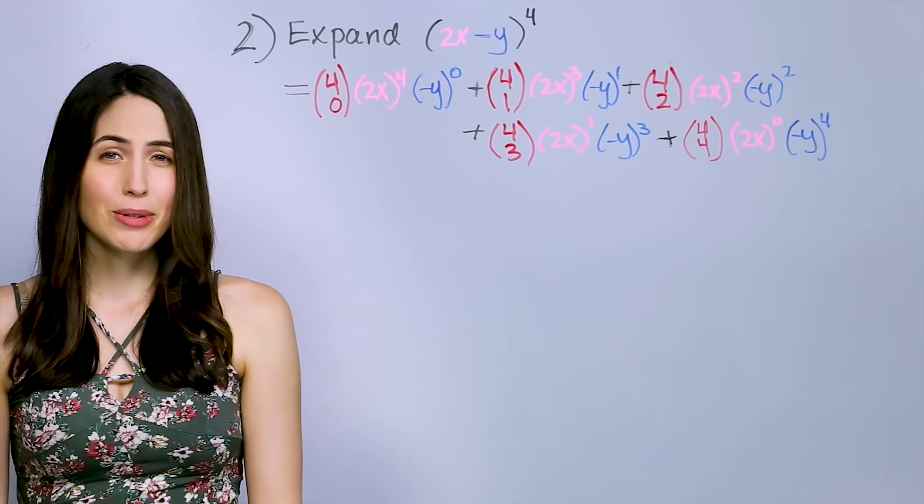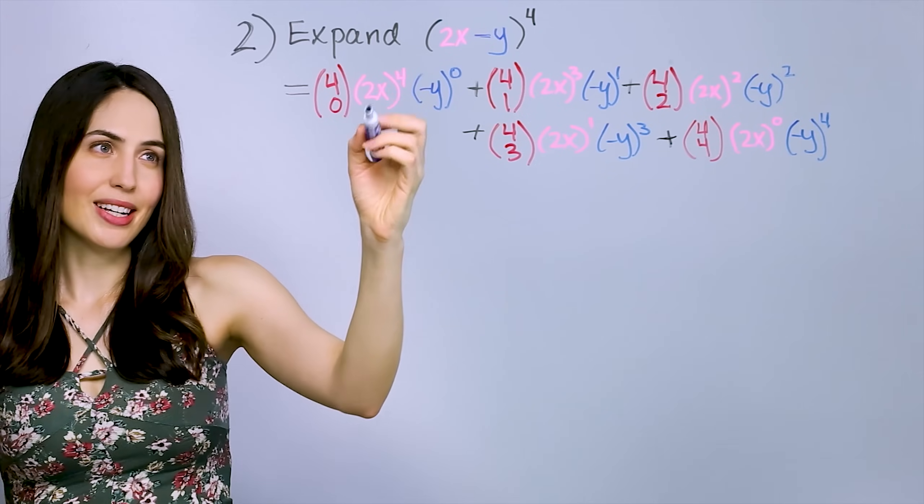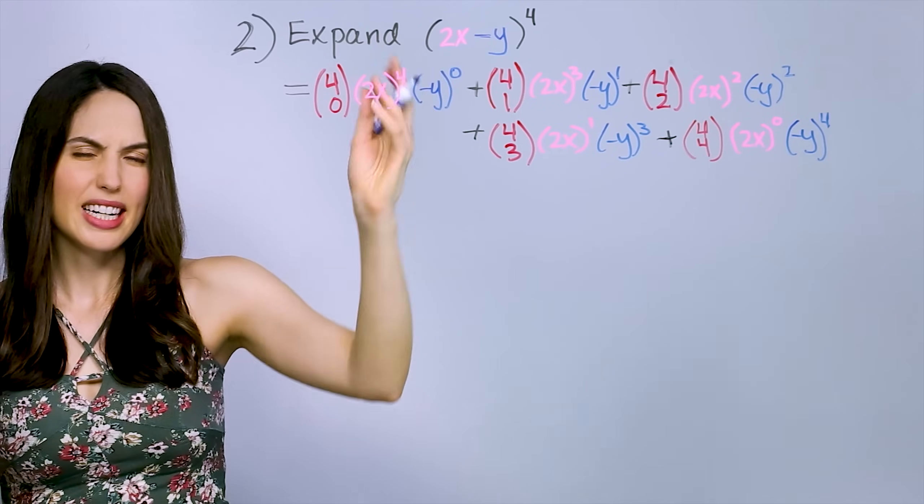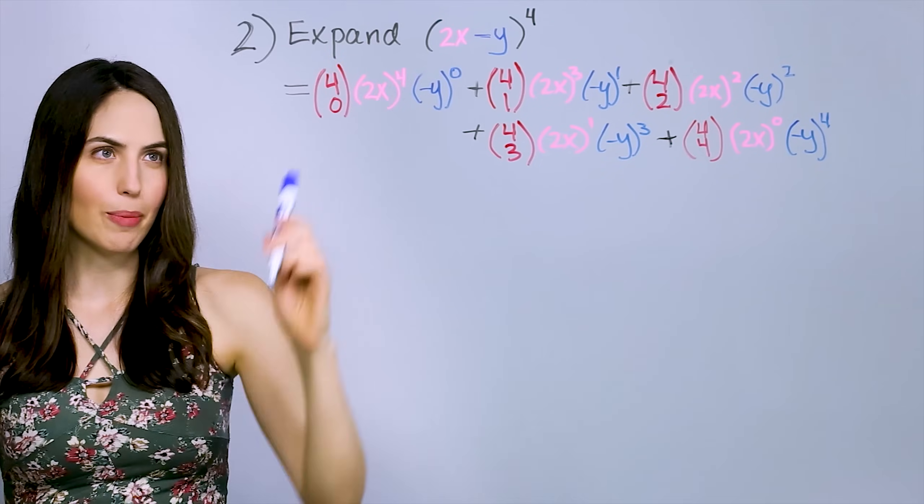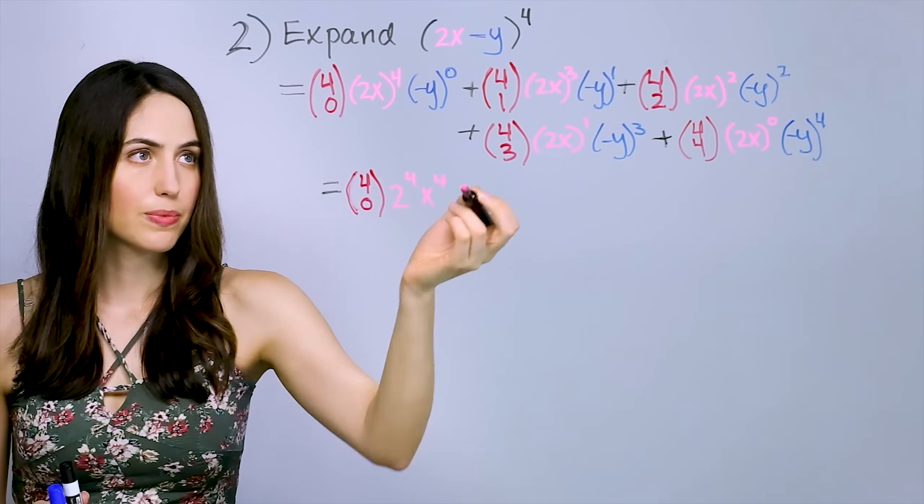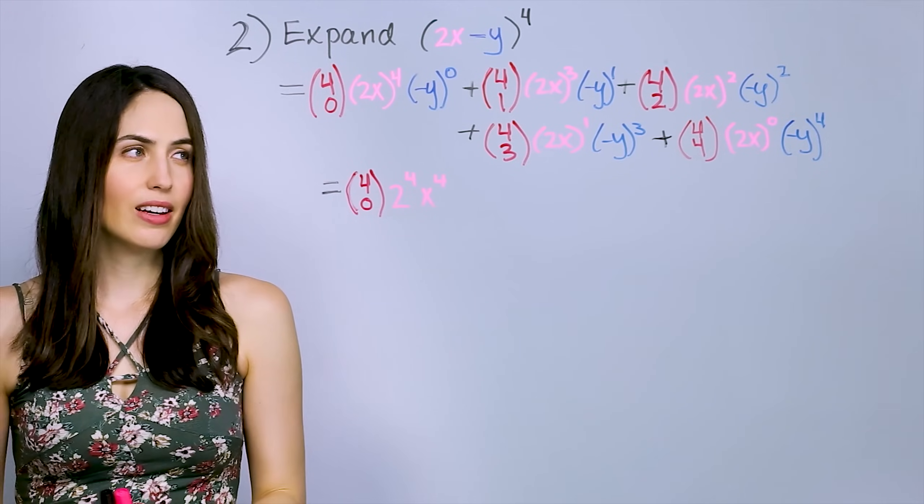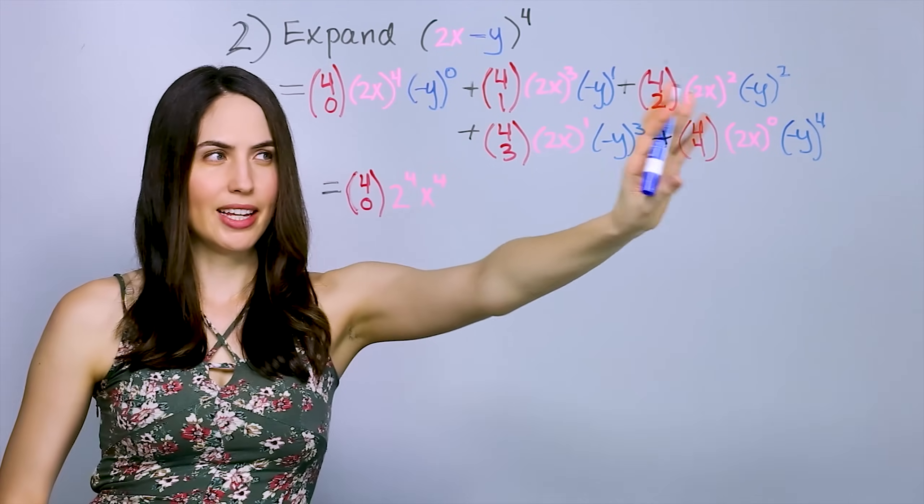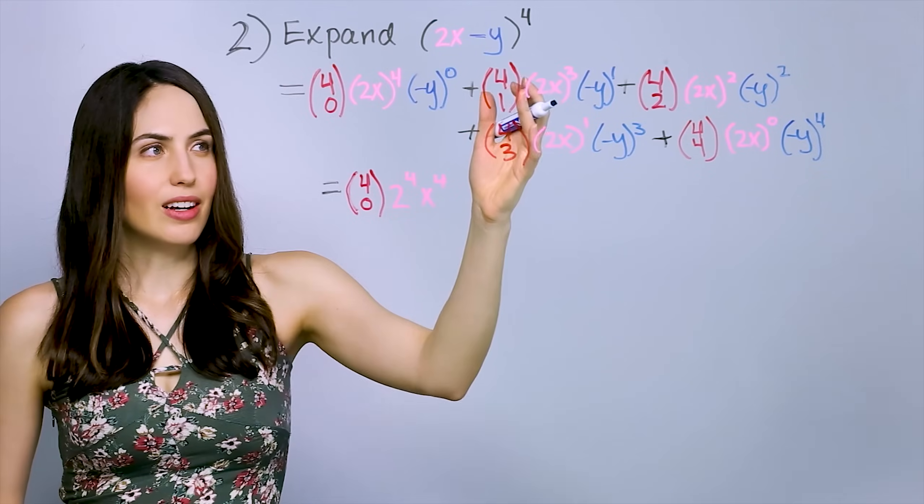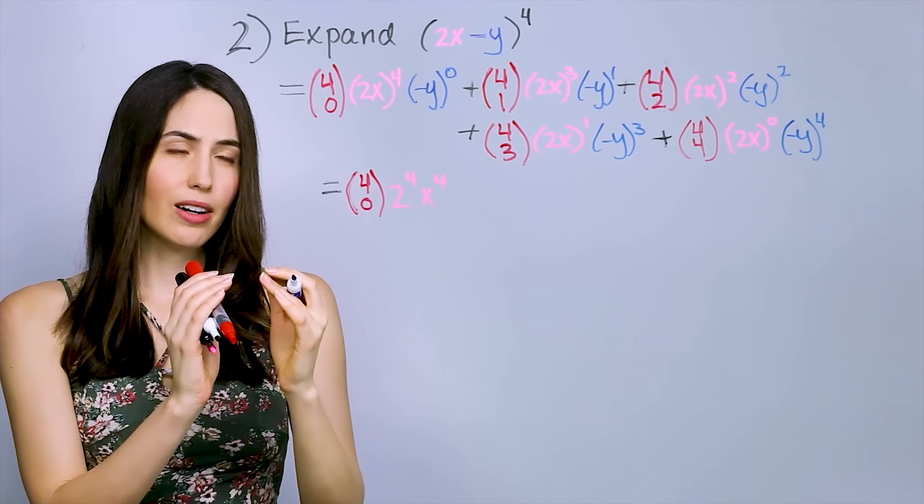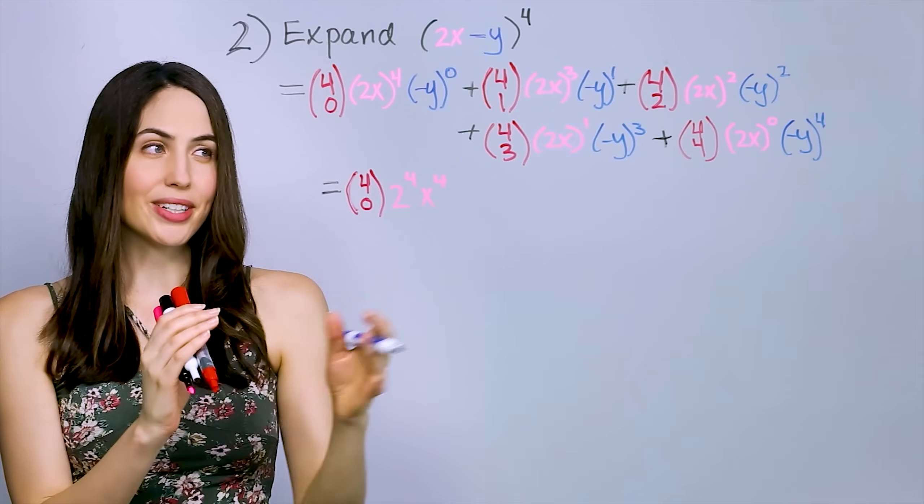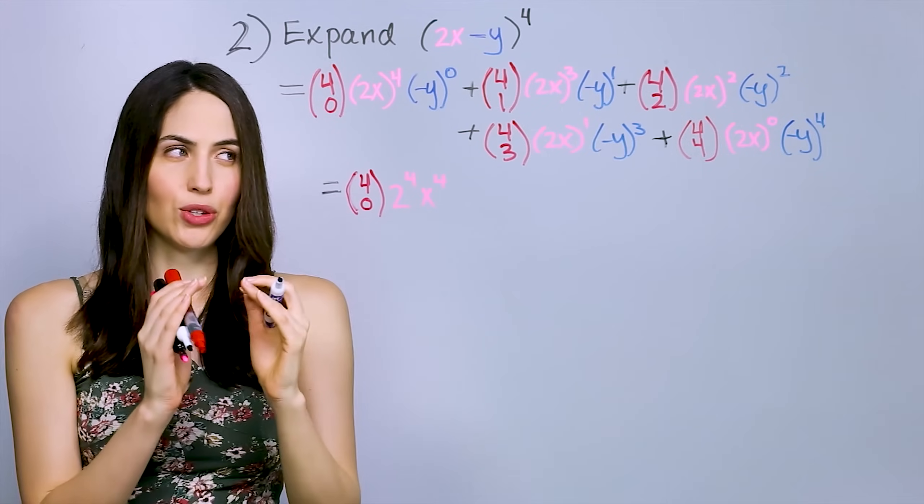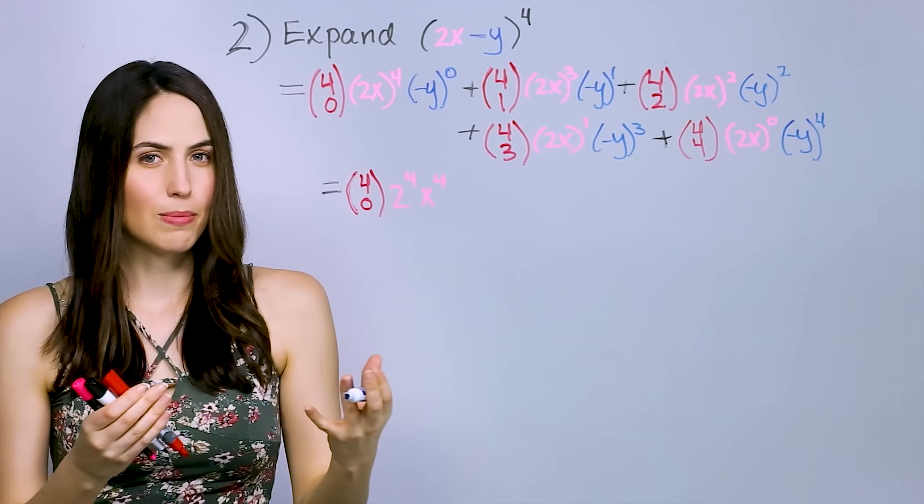Be careful! The place where a lot of people trip up is simplifying something like this. Just remember, the 2 gets raised to the power, and the x gets raised to the power, each of them. So 2 to the 4th power, x to the 4th power. And then for these negative y's to simplify, anything to the 0 power, you know, is just going to be 1. But what about these negative y's? Yeah, just remember, so negative y raised to an odd power, like 1 or 3, will stay negative overall. And negative y raised to an even power, like 2 or 4, will become positive overall.